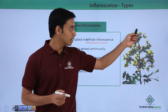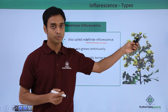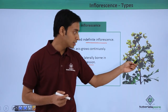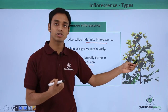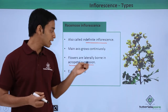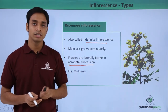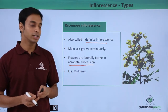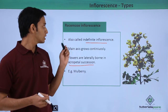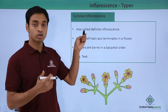The tips are the growing ends of the floral axis or the peduncle. The older, bigger flowers are found at the base of the axis, whereas the newer flowers are found at the tip. This type of arrangement is known as acropetal succession and is mostly found in plants like mulberry.